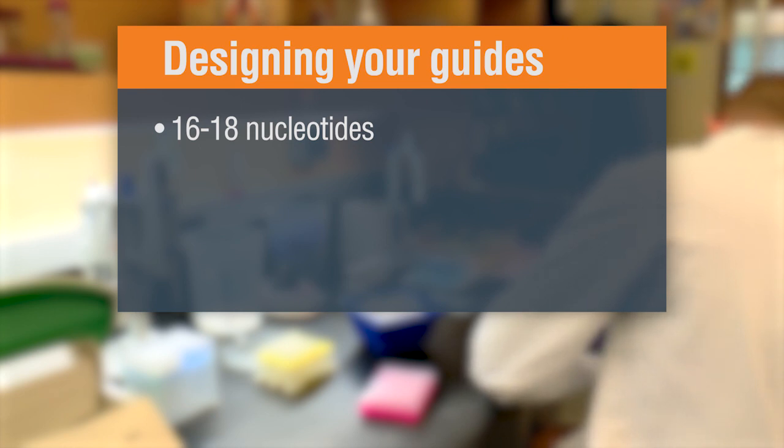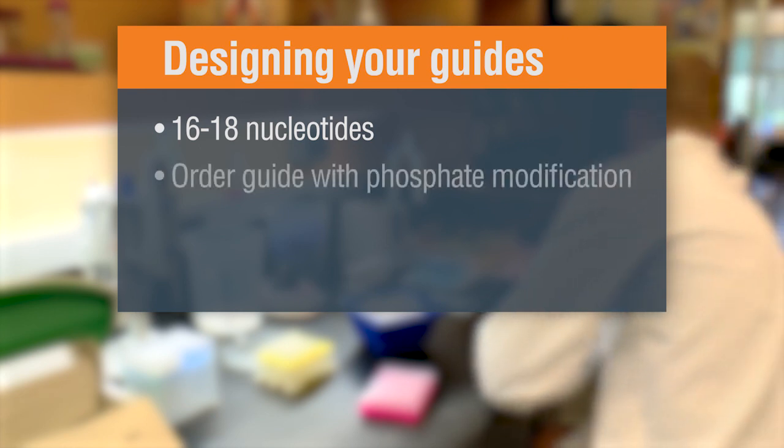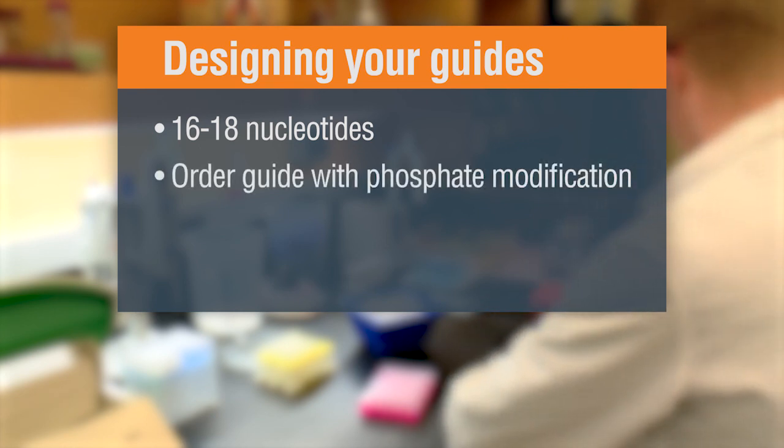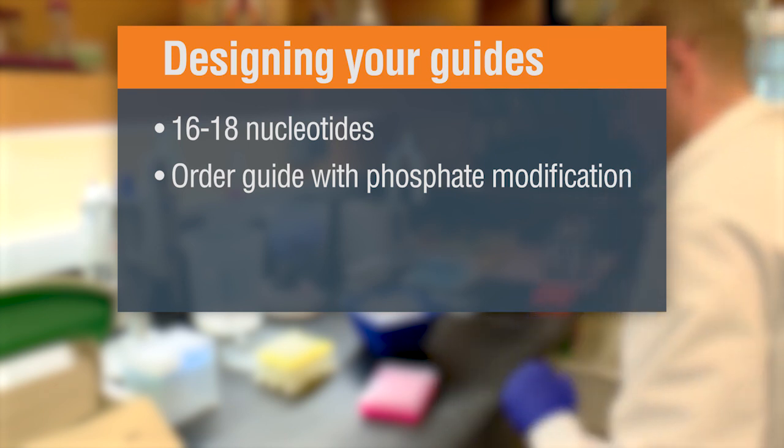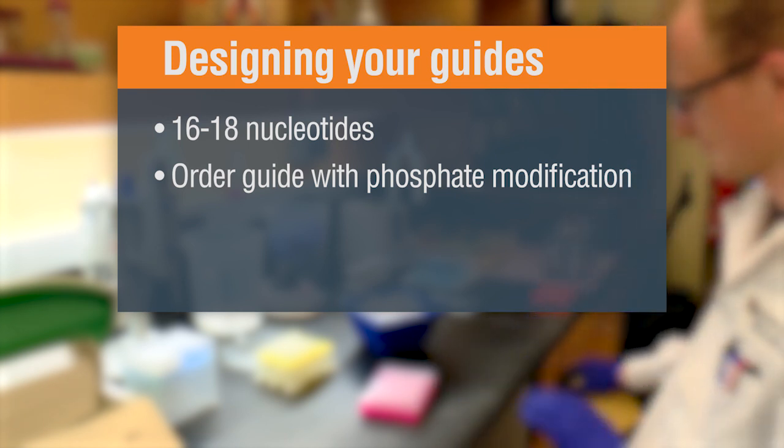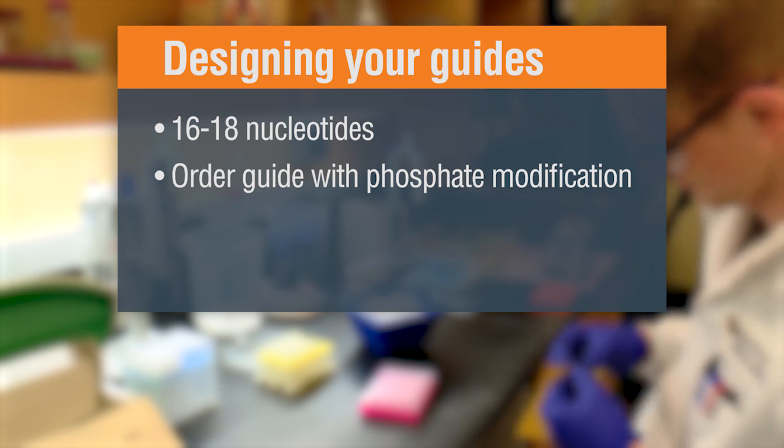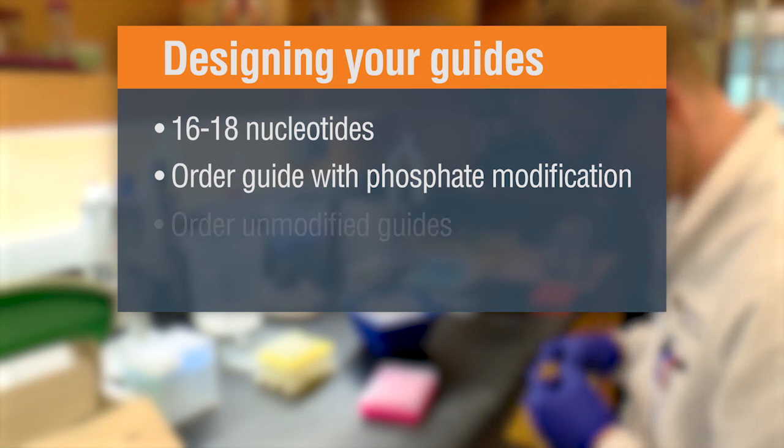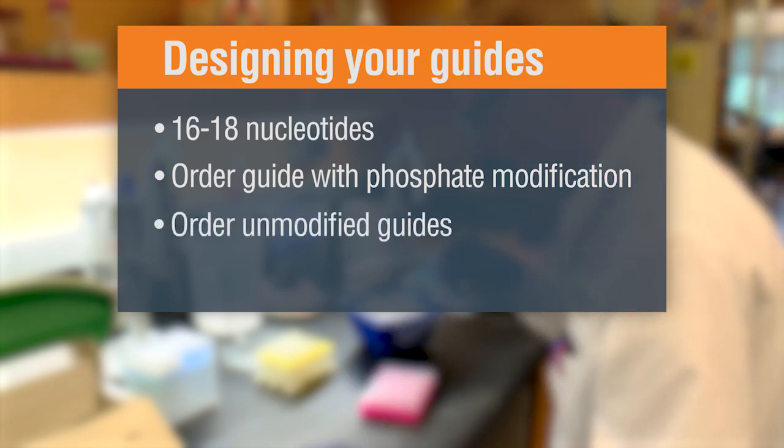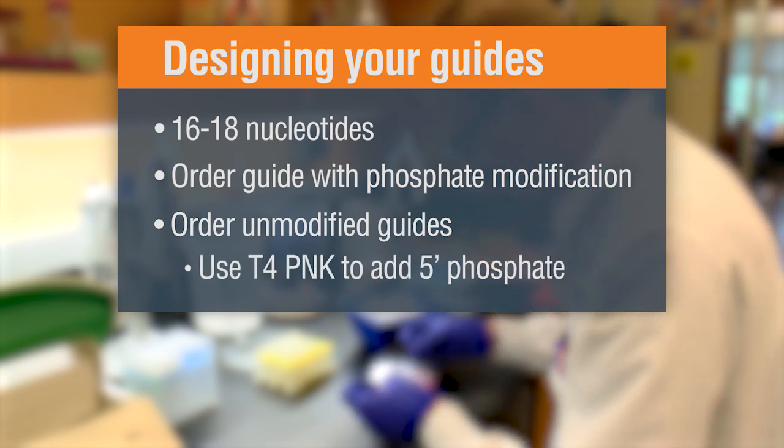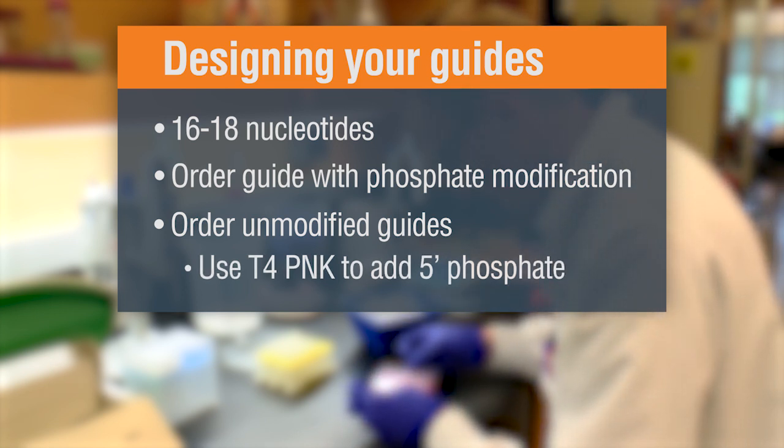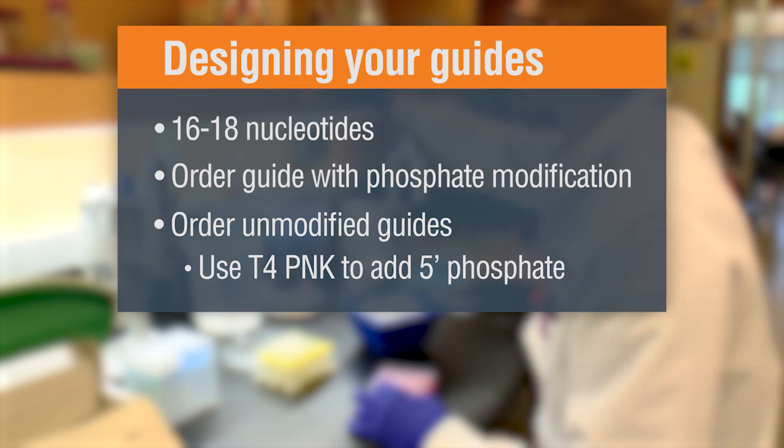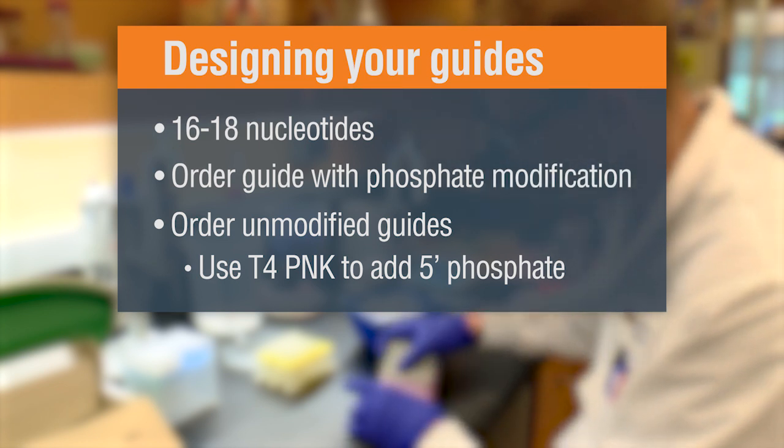We have a couple of different methods. You could order them directly with the phosphate modification already present, or we also have methods if you want to do high-throughput screening or a more economical way to make them if you're not sure what you want to target right away. You could just order unmodified guides and then use our T4 PNK polynucleotide kinase to add a 5' phosphate to those guides. And actually, if you just heat and activate the enzyme, you can use it directly right after that.